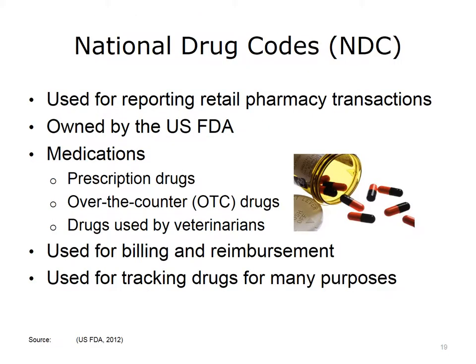The National Drug Codes, called NDC, is a HIPAA standard code set used for reporting retail pharmacy transactions. The NDC is owned by the U.S. Food and Drug Administration, or FDA, and is distributed by the Department of Health and Human Services. The code set identifies the ingredients and other characteristics of prescription drugs, over-the-counter or OTC drugs, and drugs used by veterinarians. Uses include coding medications for billing and reimbursement, tracking drug use for public health protection, tracking adverse drug events, identifying drugs for recall, and evaluating the effectiveness of drugs used in natural disasters and terrorist threats.